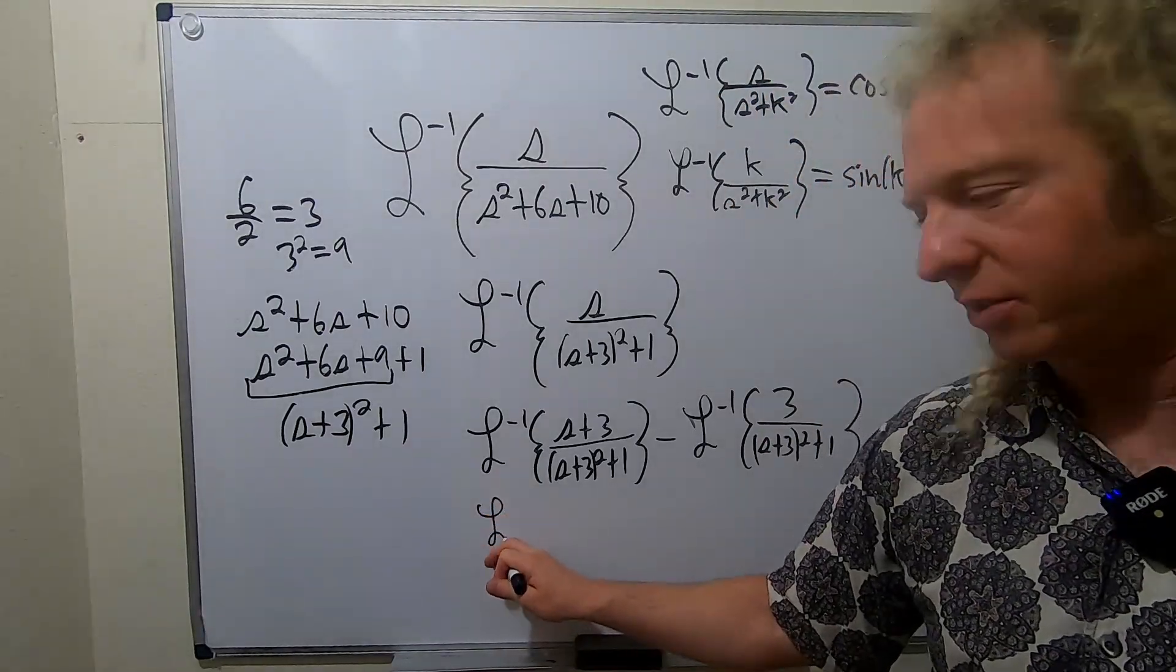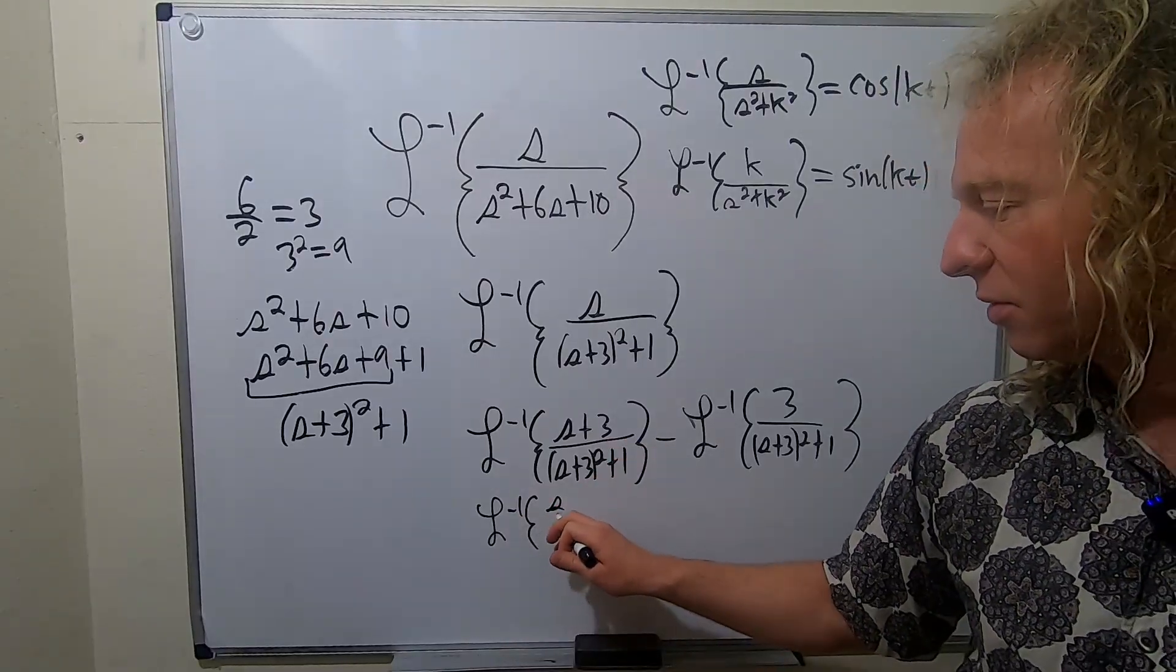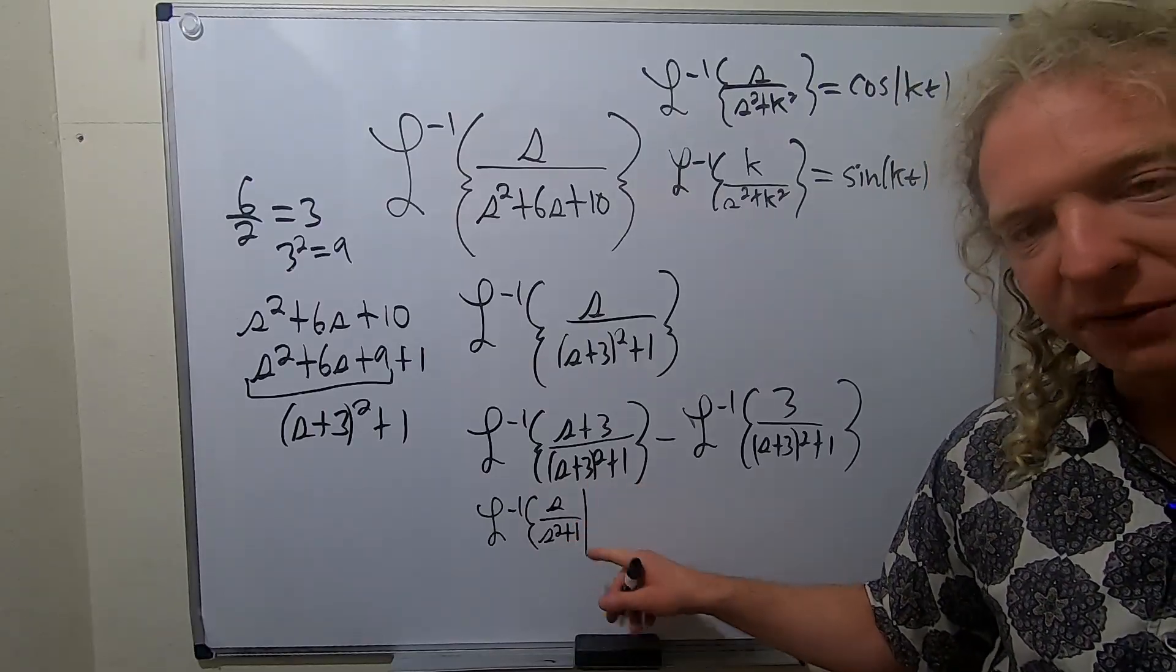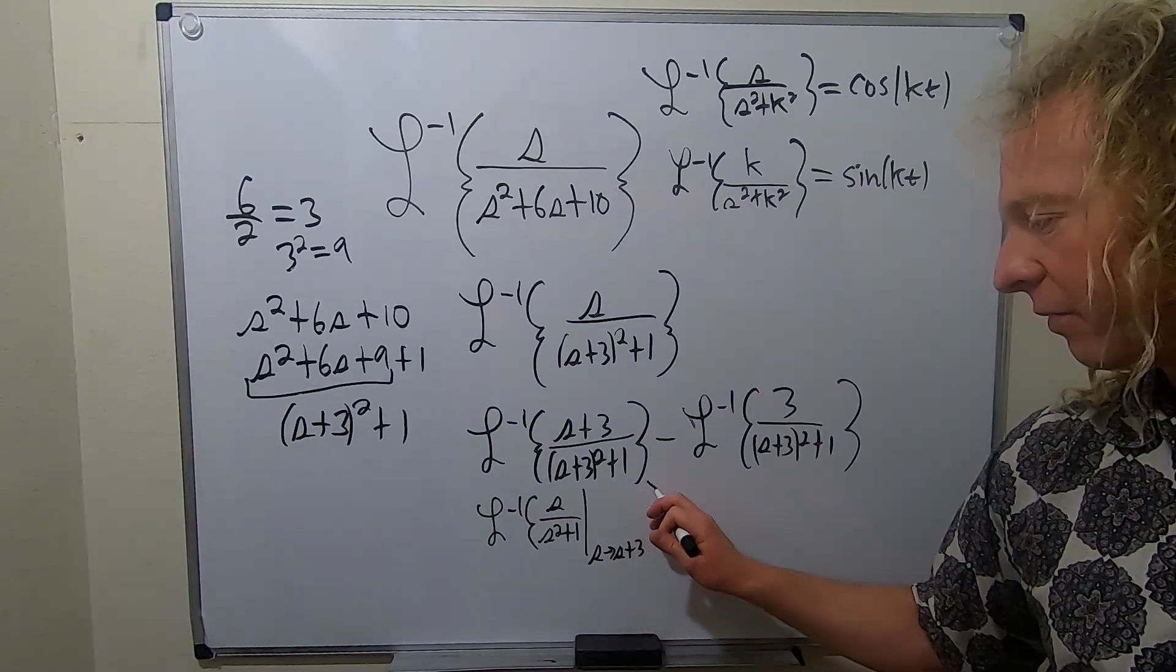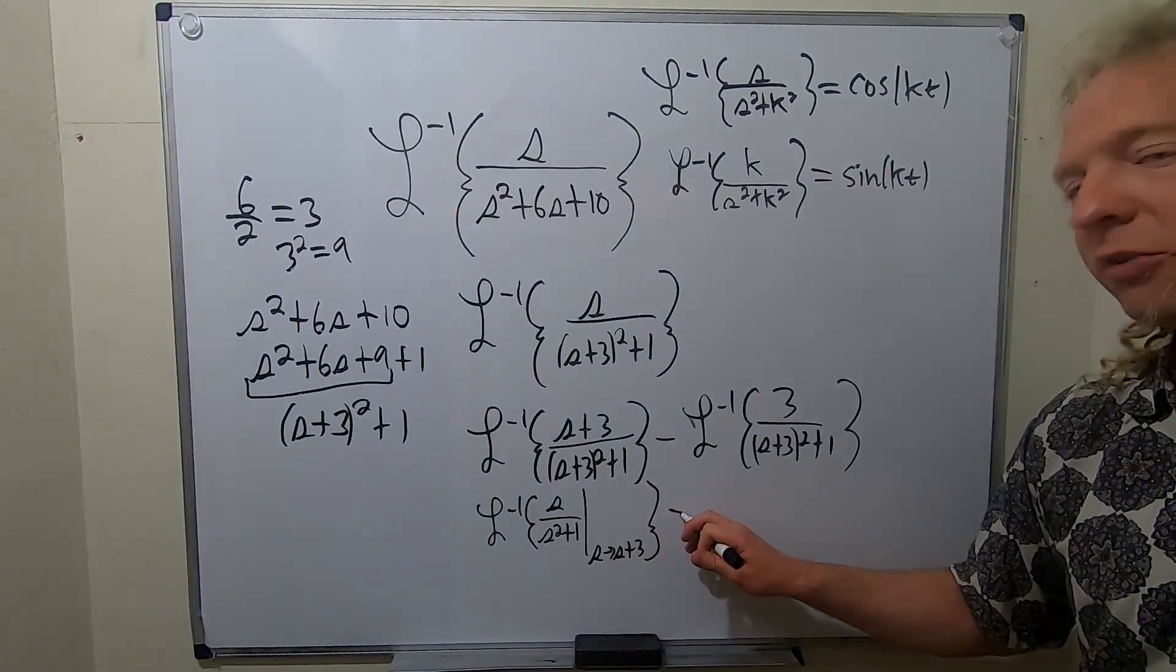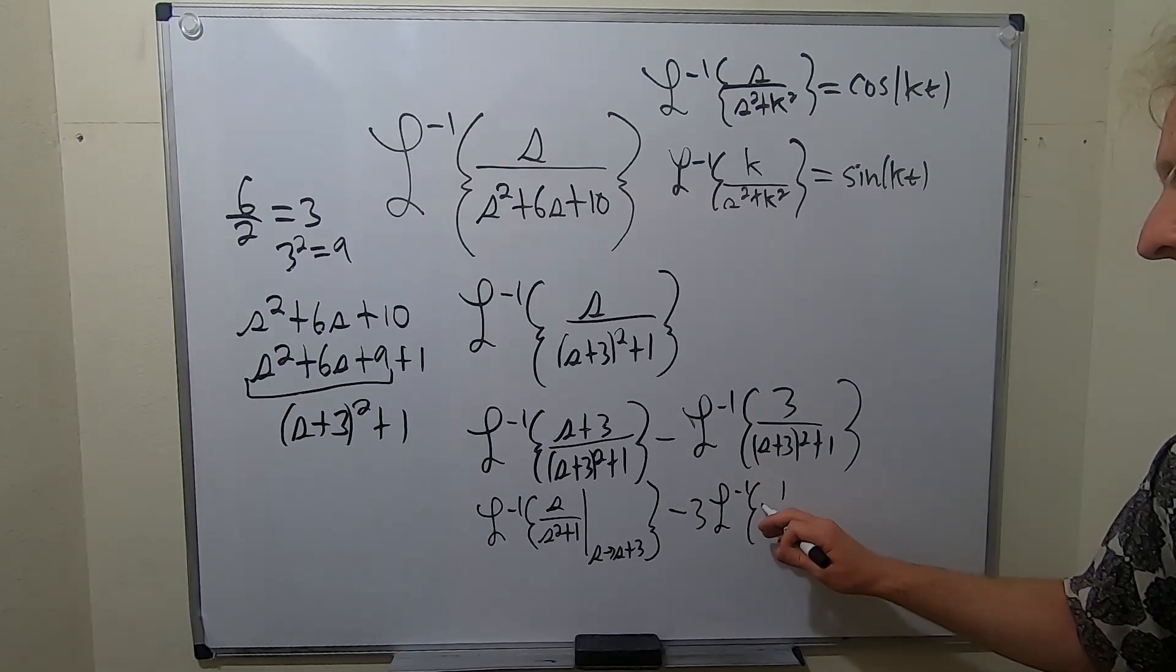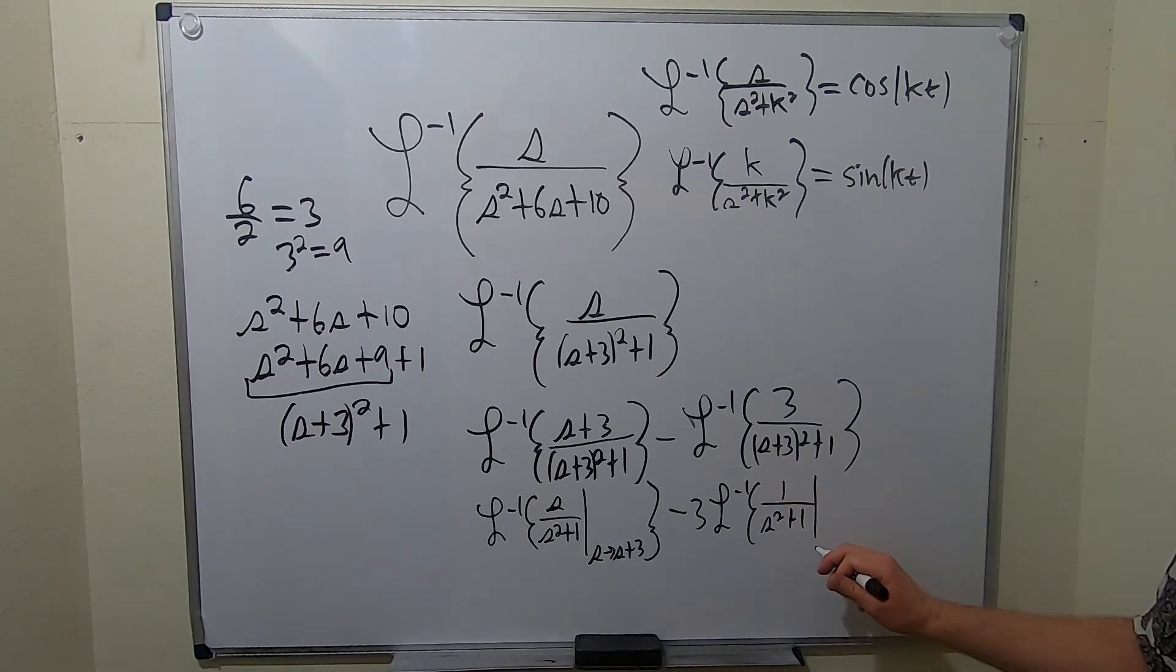So this is the inverse Laplace. We're a little smaller. I'm running out of room. This will be s over s squared plus 1. And the shift, so you draw the line. So we're going from s to s plus 3. It's beautiful. Minus, I'll pull the 3 out. So 3, inverse Laplace, 1 over s squared plus 1. And the shift goes from s to s plus 3. So s to s plus 3. Boom.